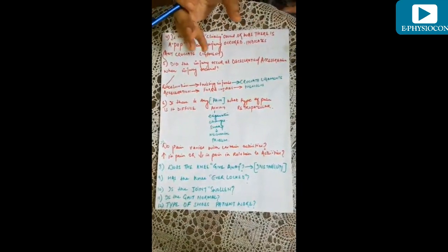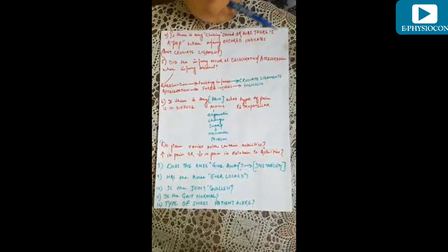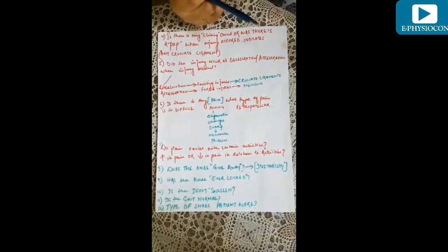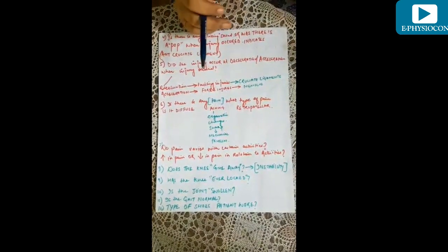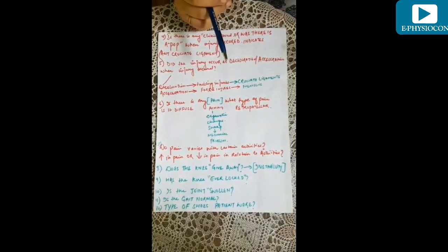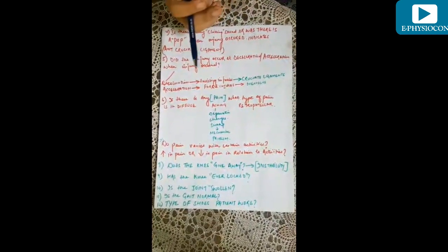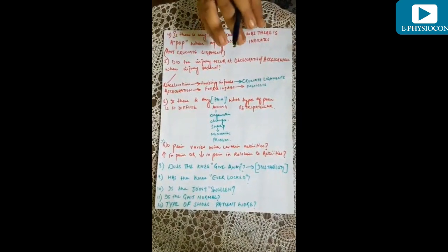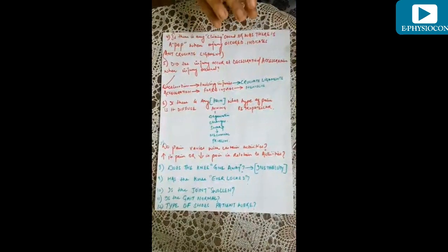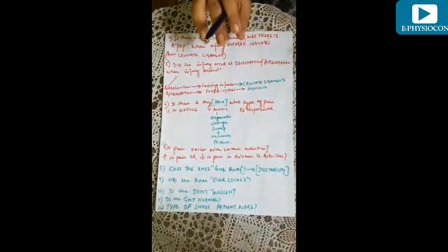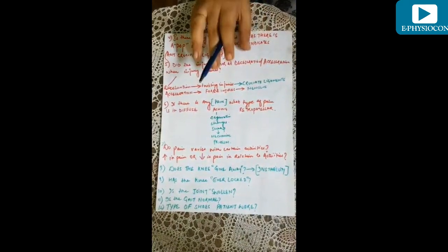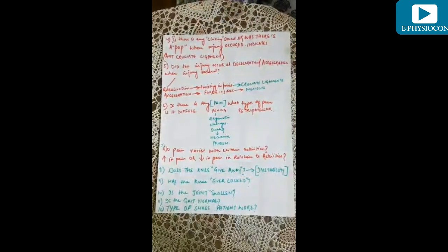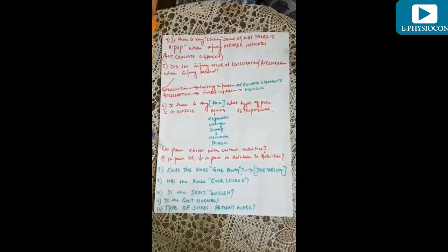The ninth question: has the knee ever locked? True locking of the knee is rare. Loose bodies — sometimes from degeneration where outer areas of bone break off — may cause recurrent locking. Locking must be differentiated from catching, which is momentary locking or giving way due to reflex inhibition or pain. Locking in the knee usually means the knee cannot fully extend, with flexion often being normal, and is related to meniscus pathology.